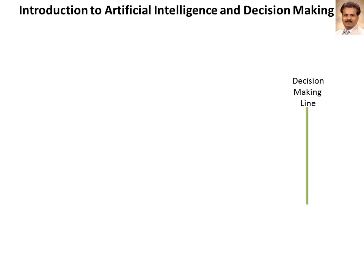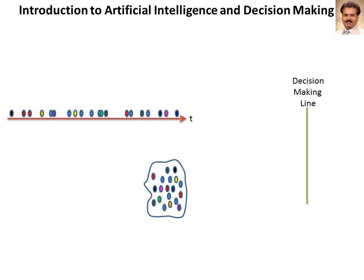If we would like to make a decision, we need data. Because at any point of time we make a decision, we do it based on some form of inputs. The origin of any inputs can be considered as data. Data can be available in two forms: the first form is called time series data or temporal form of data, and the second form is called spatial form of data.